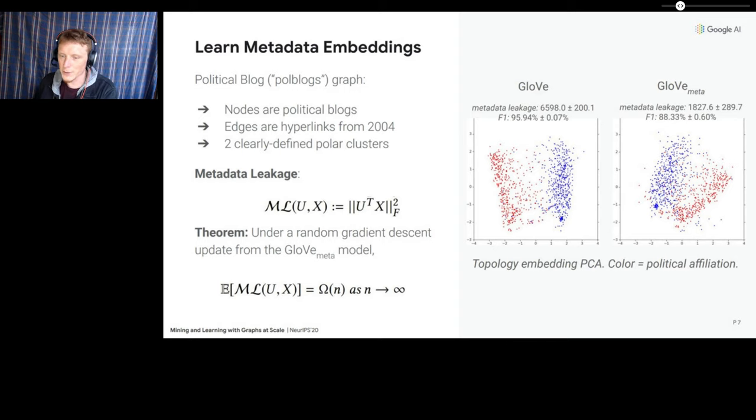So we applied that joint metadata embedding approach to a political blog graph. The nodes in this graph are political blogs, the edges in the graph are the hyperlinks that one blog links to another, and the nodes have just two attributes, a binary association with one of the two main political parties in the United States. As a baseline, we first embedded the graph by applying the GloVe algorithm to random walks from the graph, which is essentially a variant of DeepWalk. This produced two clearly defined polar clusters, and a classifier was able to predict the political blogs from the embeddings with 95% F1. So this just shows that the political blog signal is very present in the graph without any debiasing.